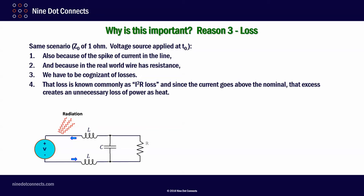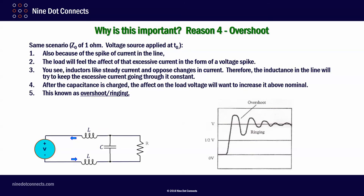Again, reason number three is loss. Same scenario. Because in the real world wire has resistance, we have to be cognizant of the losses. This loss is known as I squared R loss. And since the current goes above the nominal, that excess creates an unnecessary loss of power as heat.